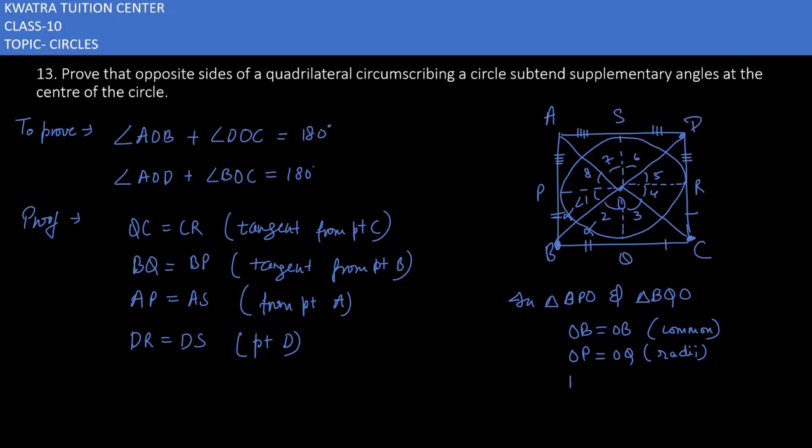And then you can mark BP as equal to BQ. What is this? These are the tangents. Or you can mark it from here. Tangents from point B will be equal. So yes they are congruent and you can say that this is by SSS congruency. And if it is following SSS congruency then you can write angle 1 is equal to angle 2.